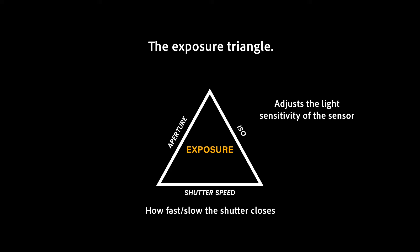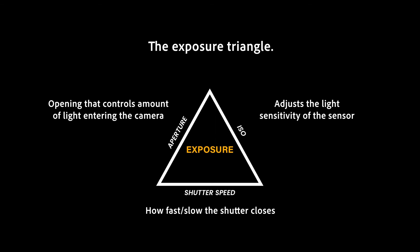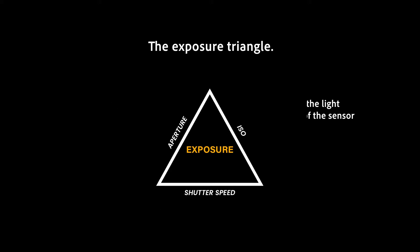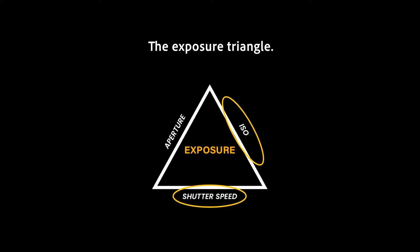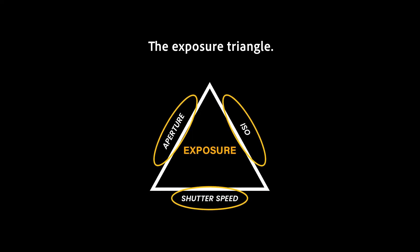Lastly, of course, we have aperture. Aperture is the adjustable lens opening that controls the amount of light that is allowed into the camera. By learning to properly adjust these three settings based on your location, light, and subject, this is essential for capturing a well-balanced exposure.